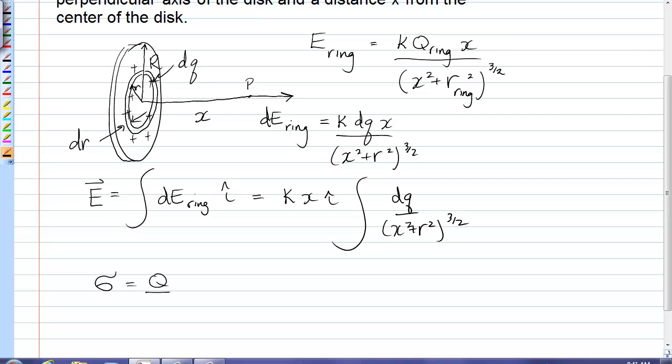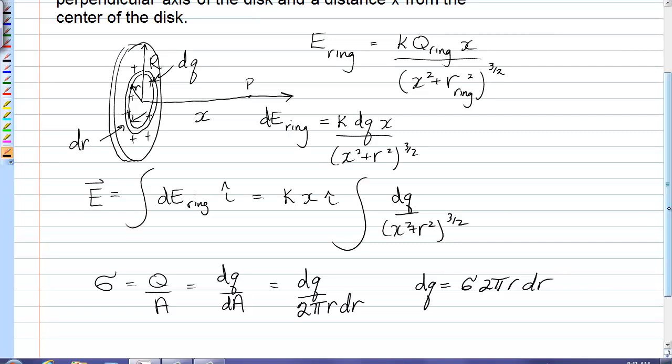Defined to be the total charge of the disk over the total area of the disk, or a little bit of charge element over a little bit of area. Now that little bit of area is the area of the ring, which is equal to 2 pi r, circumference, times thickness, dr. So I can write an expression for dq as sigma 2 pi r dr. That now goes into our integral.